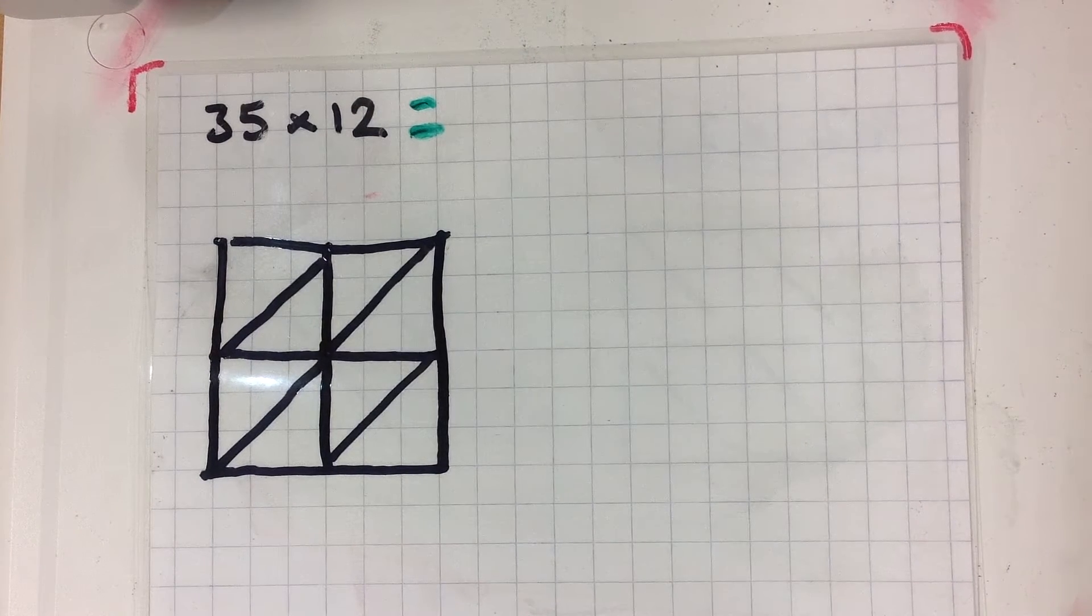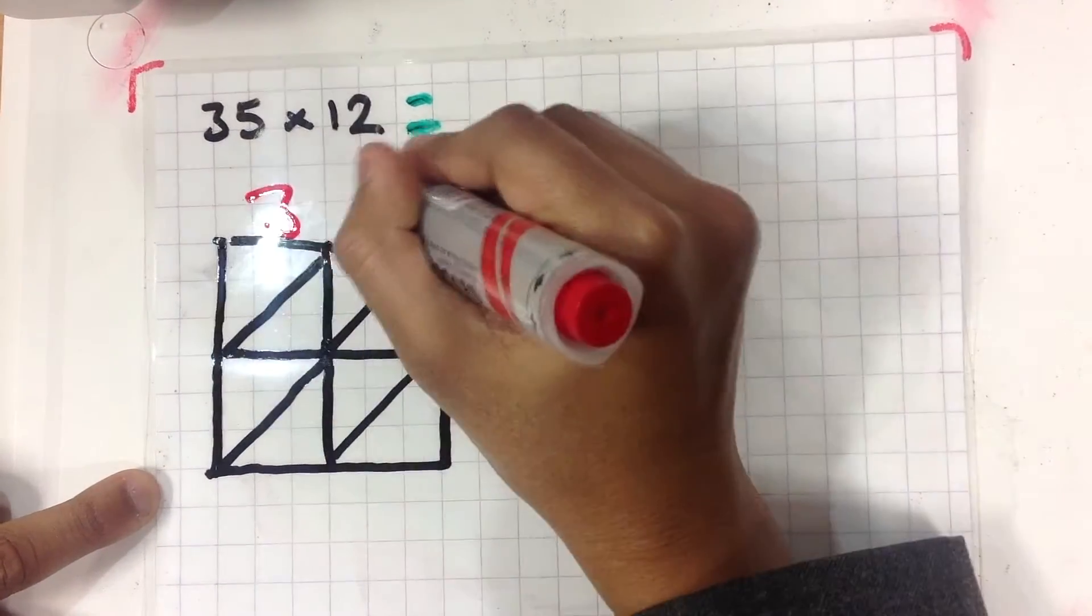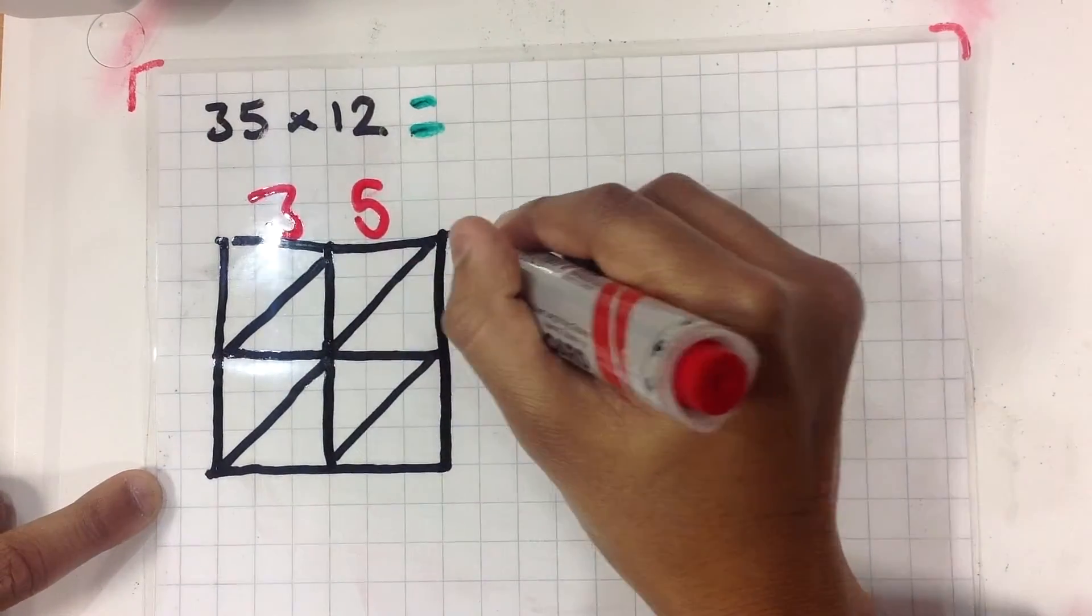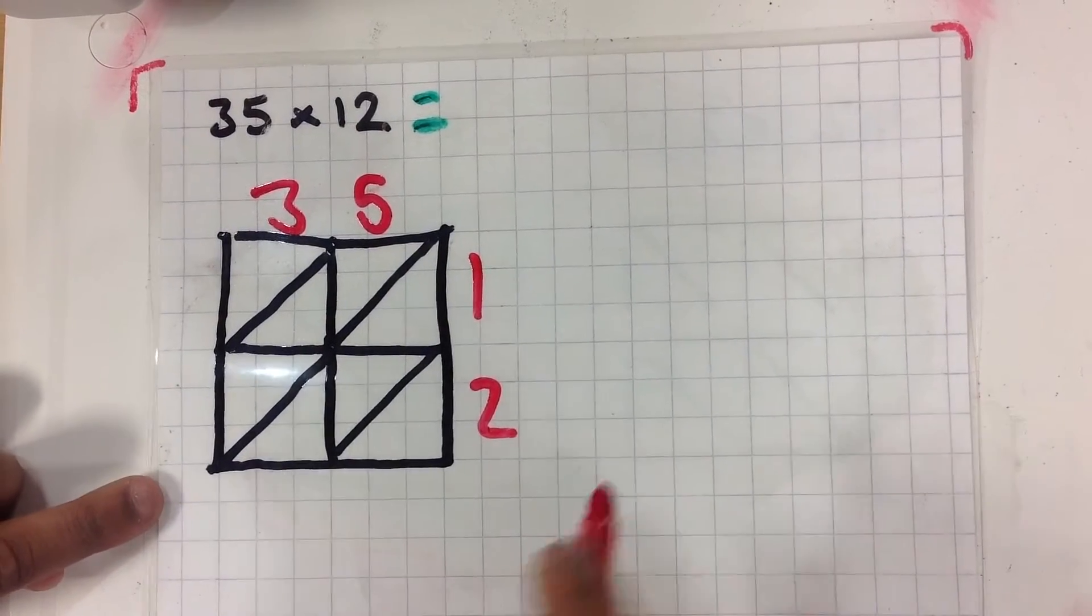Welcome to Heron Hall Maths. We are going to talk you through Chinese grid method. Well, first you put the 35 up here and then the 12 down here. I like to do 35 at the top because it's bigger, but you don't have to.